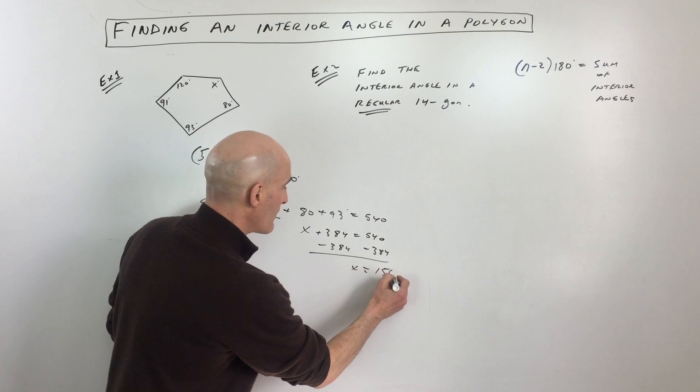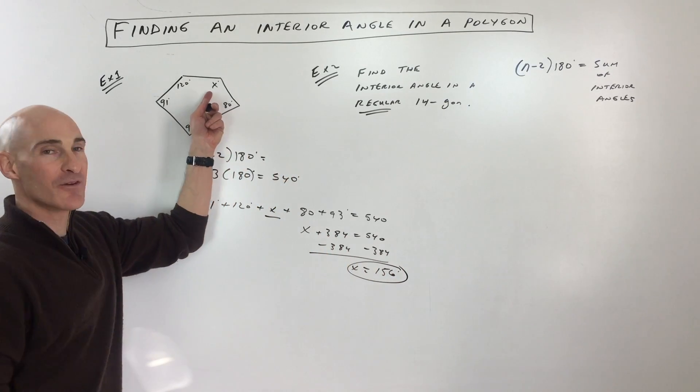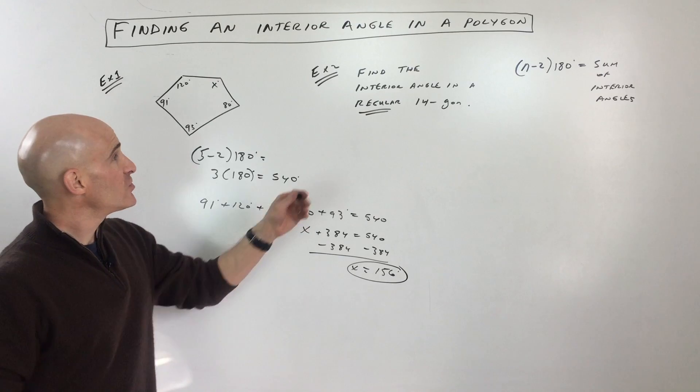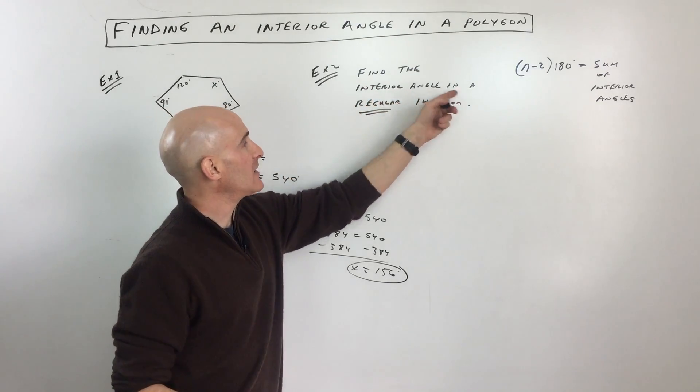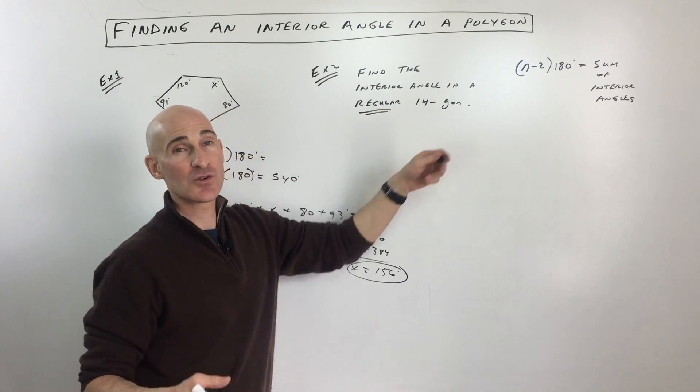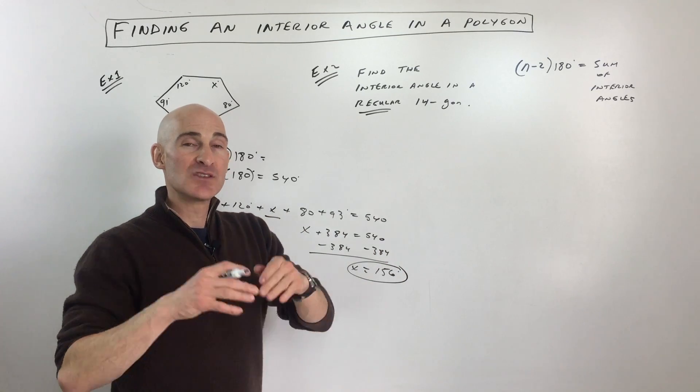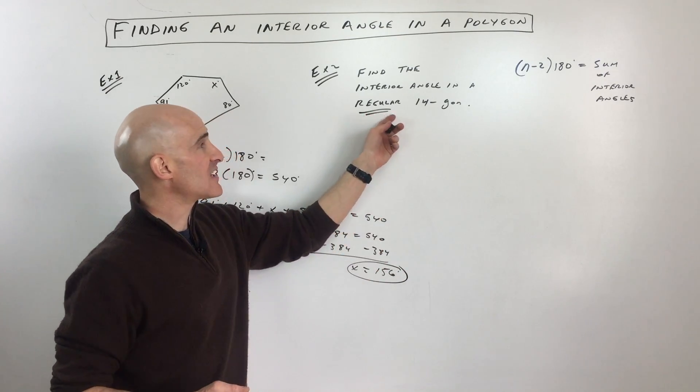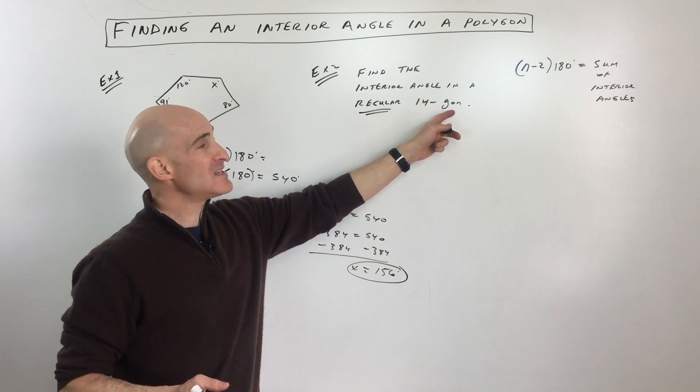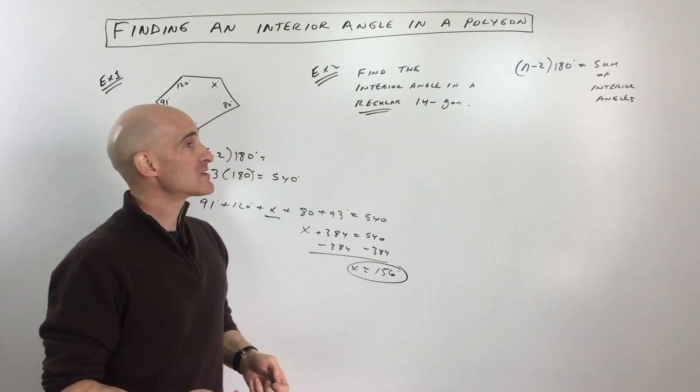So that's the measure of that missing interior angle, this one right here. Example number two says find the interior angle in a regular 14-gon. So what does it mean when they say regular? It means all the angles are the same, and all the sides are the same length as well. But if it's a 14-gon, that means it has 14 sides or 14 angles.